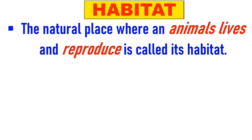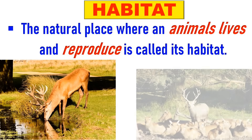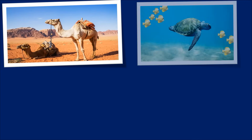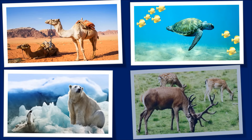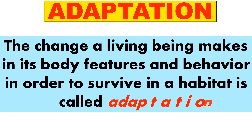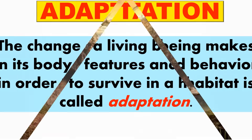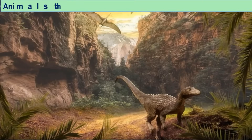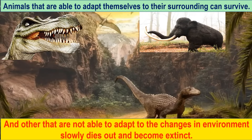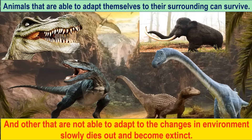What is habitat? The natural place where an animal lives and reproduces is called its habitat, and every organism has a unique habitat. To survive in a given habitat, animals need to adjust themselves to the conditions of that habitat. The change a living being makes in its body features and behavior in order to survive in a habitat is called adaptation. Animals that are able to adapt themselves to their surroundings can survive, while those that are not able to adapt slowly die out and become extinct.